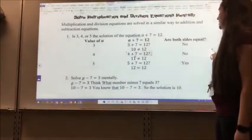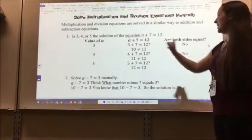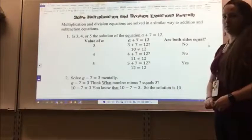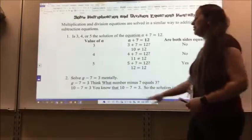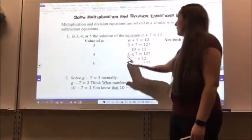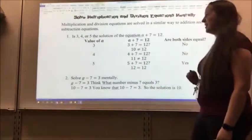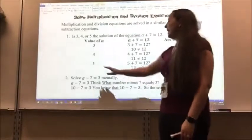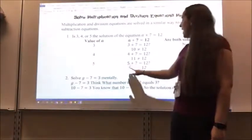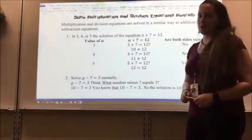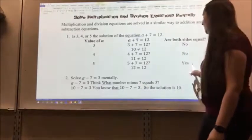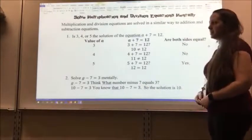I do the same thing for four. Four plus seven is eleven, so that is not a solution. And then I do it for five. Five plus seven is equal to twelve. Twelve does equal twelve, so that is my solution. So five is my solution.